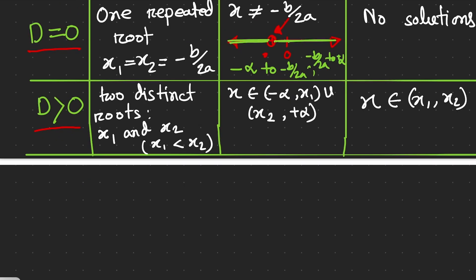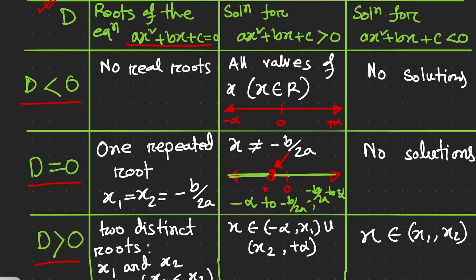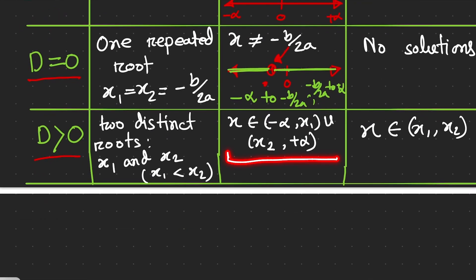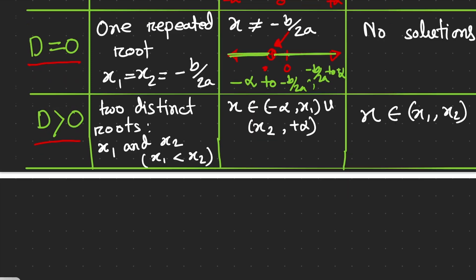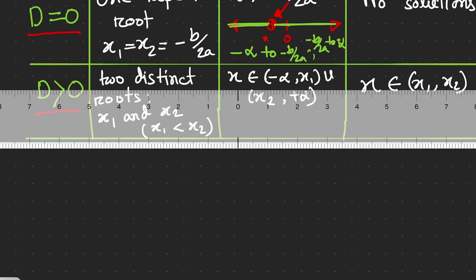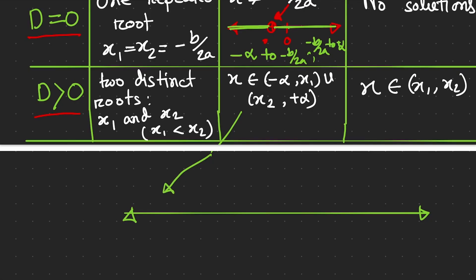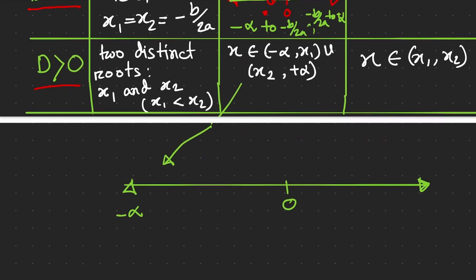Our third option, which is more common and practical — this case usually comes in exams — is when D > 0. There are two distinct roots x₁ and x₂, meaning the roots are different numbers, one smaller and one greater. In this case, for the inequality ax² + bx + c > 0, the solution is x ∈ (−∞, x₁) ∪ (x₂, +∞).